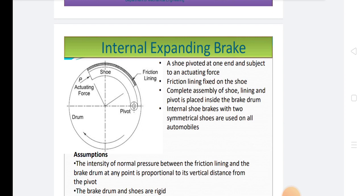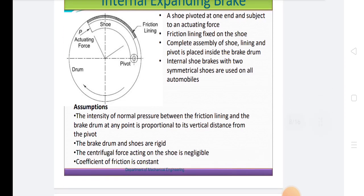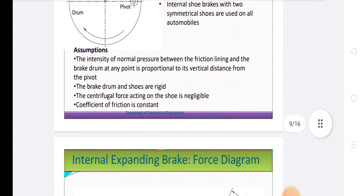Internal shoe brakes with two symmetrical shoes are used on all automobiles. There are some assumptions: the intensity of normal pressure between the friction lining and the brake drum at any point is proportional to its vertical distance from the pivot, the brake drum and shoes are rigid, the centripetal force acting on the shoes is negligible, and coefficient of friction is constant.